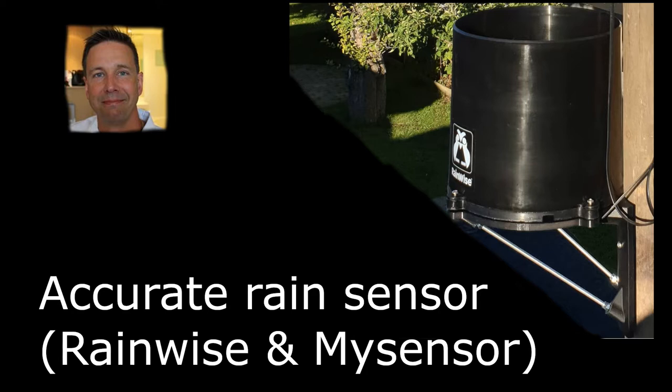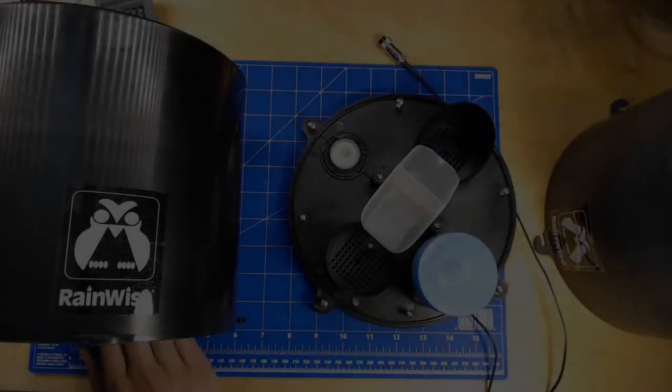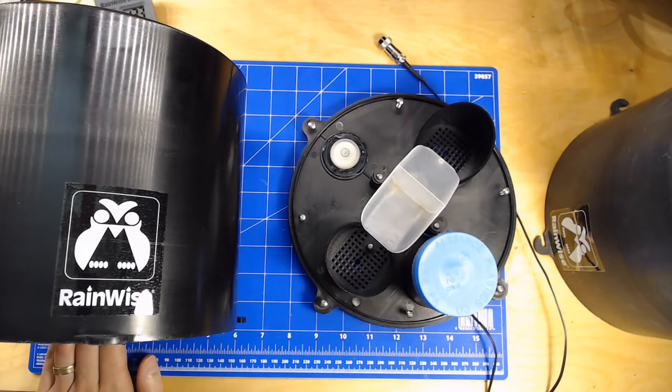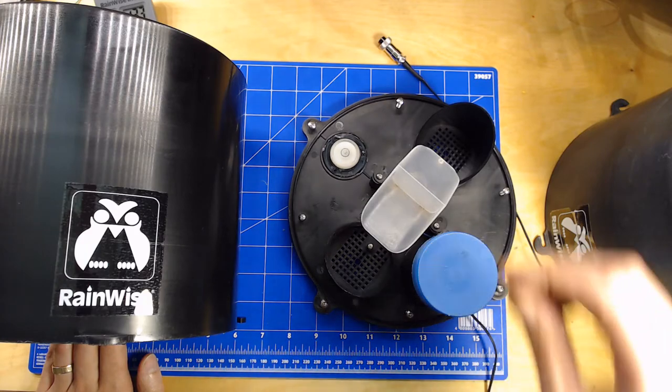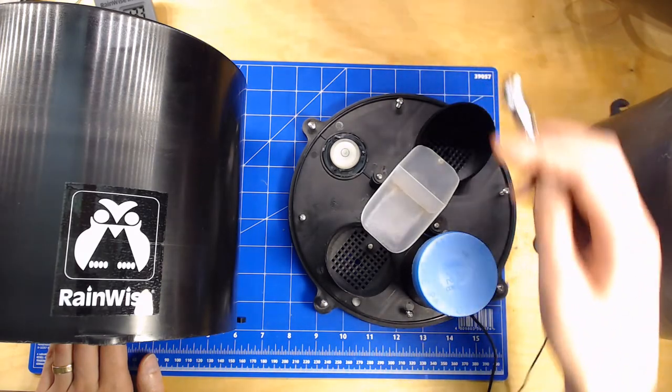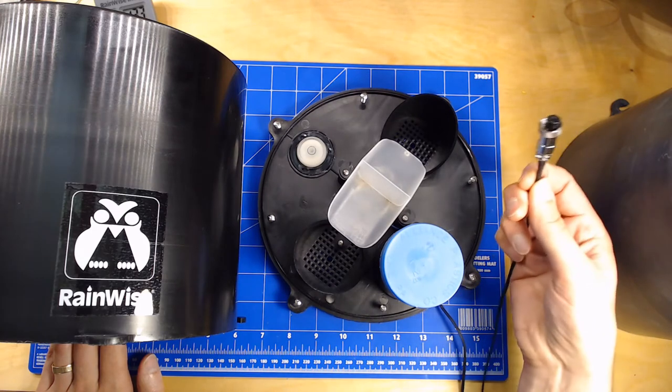This is the Rainwise 111 that I'm going to transform into a wireless sensor using the MySensors framework. I use it in different ways. In this example here, I have it semi-wired and just mounted into a weather station which is used as a central place for the radio.